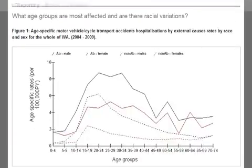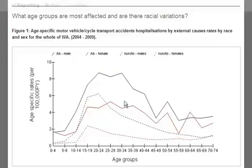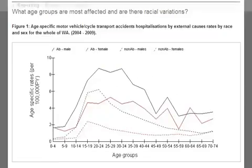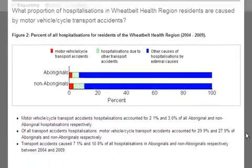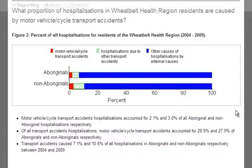Figure 1 shows age-specific rates by sex for WA, and we see that for the whole state, not just the wheat belt region, the situation is actually the opposite — Aboriginal rates are consistently higher than non-Aboriginal rates and also stay higher into older age groups. Figure 2 and the interpretation below indicate that while vehicle accidents cause a slightly smaller proportion of all hospitalisations due to external causes in the Aboriginal population, they are responsible for a slightly larger proportion of all transport accident-related hospitalisations.